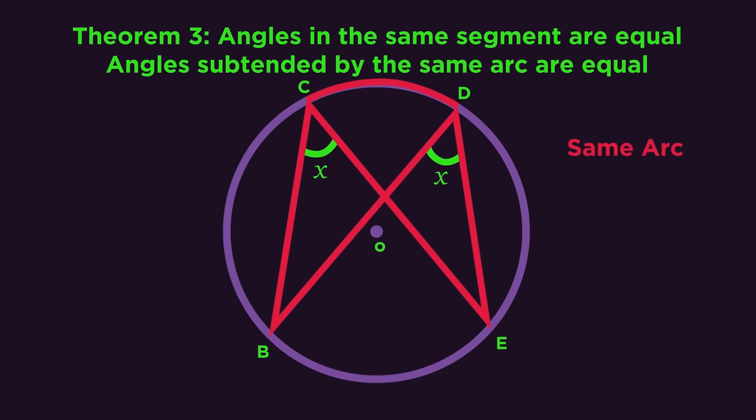You may like to remember it as a bow tie shape but you do need to use the key words segment or subtended by the same arc. You choose which one you think is easier to remember.